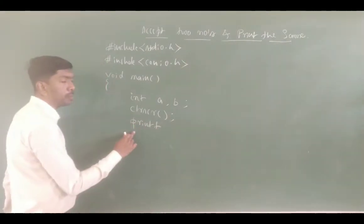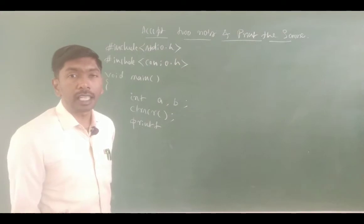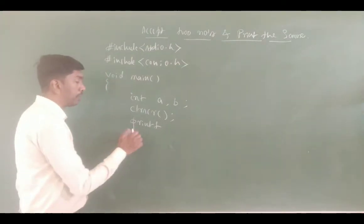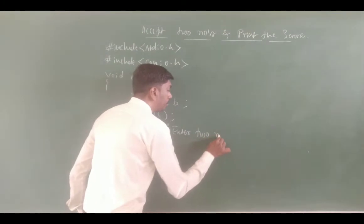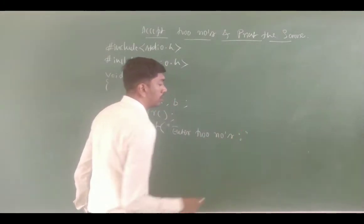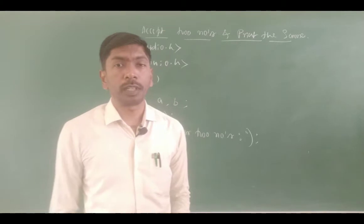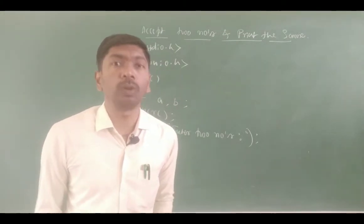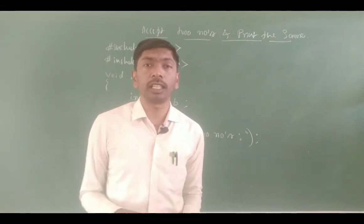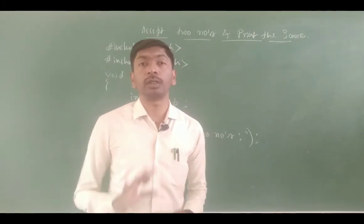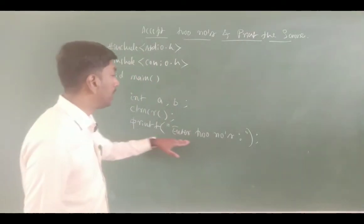p in printf is small case — sometimes it appears as capital, but the correct appearance is small case, so caps lock should be off. We use printf with double quotes: "Enter two numbers", then close the bracket and put a semicolon. Every statement must terminate with a semicolon — that shows the end of the statement.